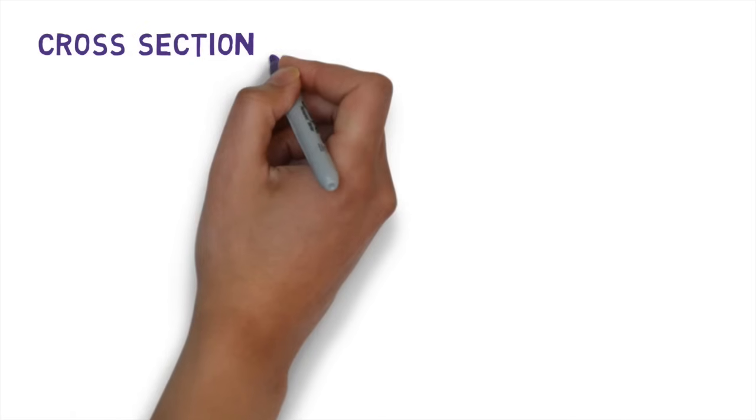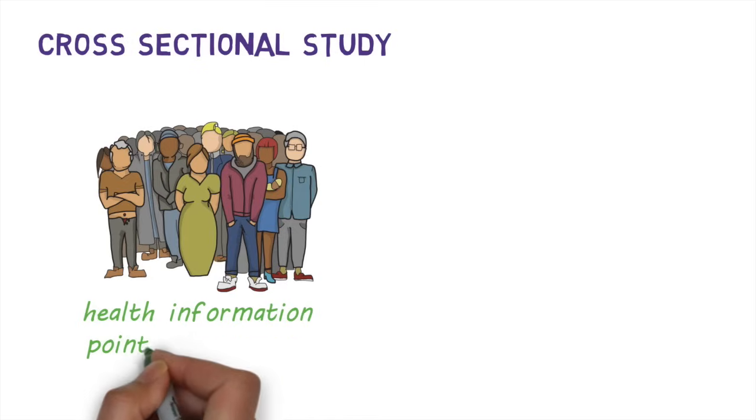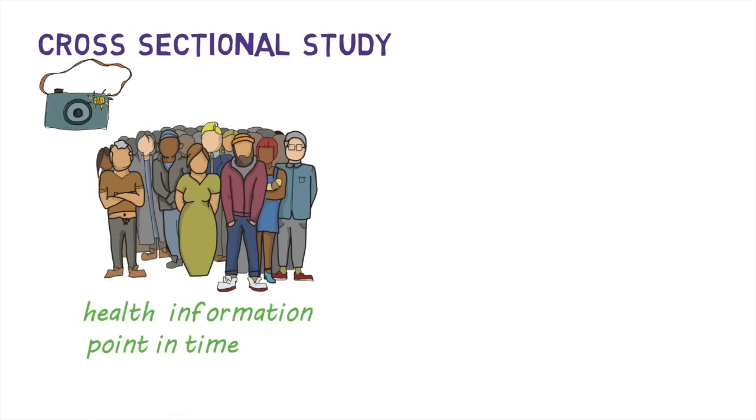A cross-sectional study takes a selected population and measures health information at a given point of time, giving a snapshot of their health. It usually involves asking participants a series of questions using a questionnaire. Health surveys that collect health information about people in a population is an example of a cross-sectional study.